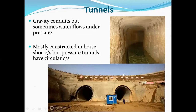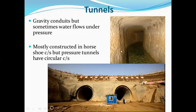Tunnels: if there is a high-rise ground or terrain in between the source of water and the treatment plant, then a tunnel can be excavated to carry water between these two points. This is a gravity conduit, but sometimes water flows under pressure — if the tunnel is completely filled with water it can flow under pressure. The cross section of these tunnels may be circular or horseshoe type, and generally pressure tunnels are constructed with a circular cross section.